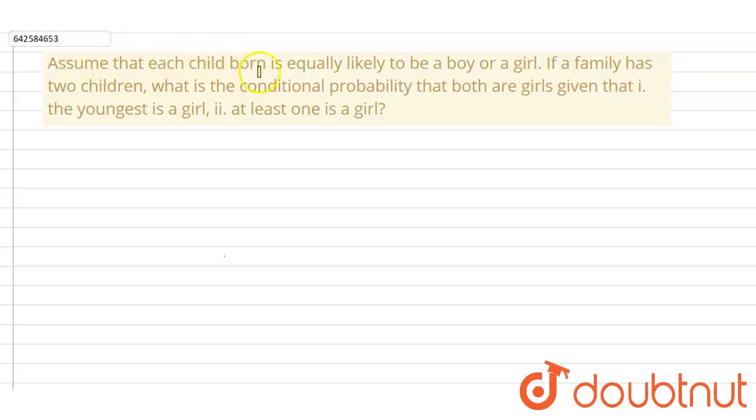Assume that each child born is equally likely to be a boy or a girl. If a family has two children, what is the conditional probability that both are girls given that i) the youngest is a girl, and ii) at least one is a girl?